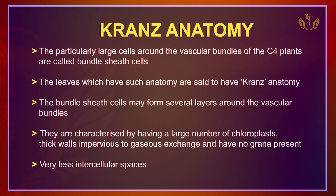The mesophyll cells and bundle sheath cells are very important for the C4 cycle. In the bundle sheath cells: grana are not present, they are impervious to gases, a large number of chloroplasts are present, and intercellular spaces are very low. Now we will start drawing the C4 cycle.